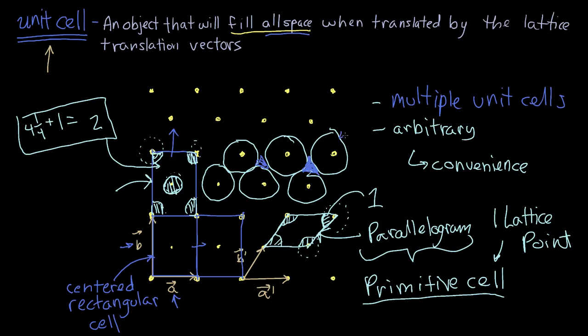So these circles would not fill space, which would break our definition of a unit cell, meaning that circles are not a valid unit cell in 2D space.